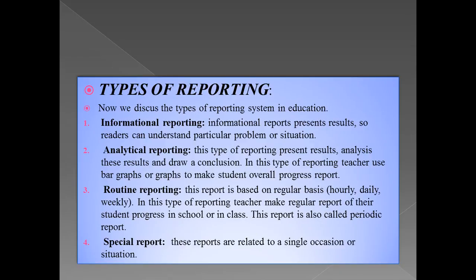Third, we have routine reporting. In this, the teacher reports on the student on a regular basis — like hourly, daily, and weekly. In this reporting, the teacher makes recurrent and repeated reports and annually informs parents about the student's progress throughout the year: how active they were in class and how much participation they took. This report is also called a periodic report. Fourth, we have special report. In special reporting, for example if an event is being celebrated at school, it is observed how much the student is participating, and a report is prepared and the parents are informed about how much their child participated in the event or occasion, how active they were, and how much participation they took. This is called a special report.